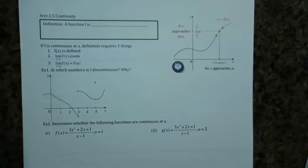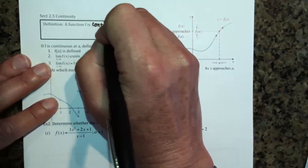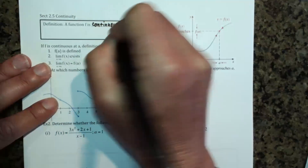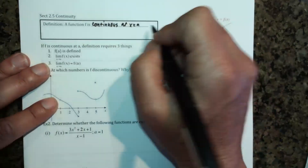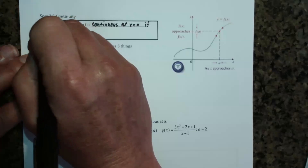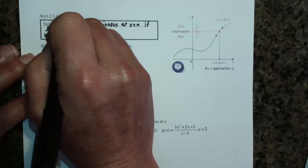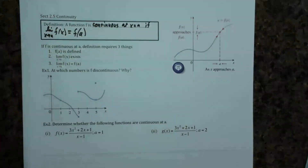Hello, welcome back. We are doing section 2.5 today. We're going to be talking about continuity — where a function is continuous and where it is discontinuous. A function F is continuous at x equals a if the limit as x approaches a of F(x) is equal to F(a). That's going to be our main way of doing that.